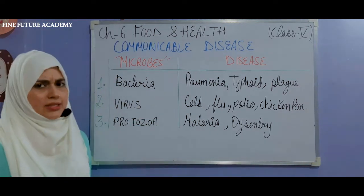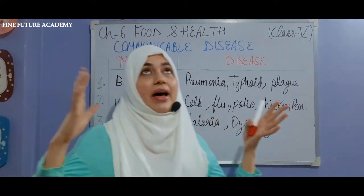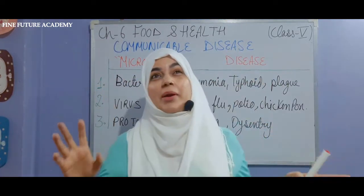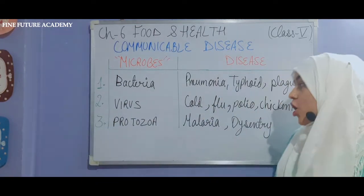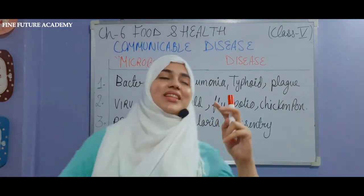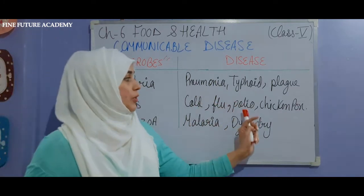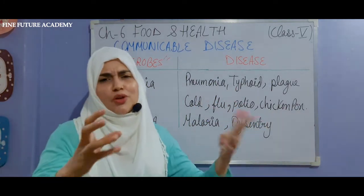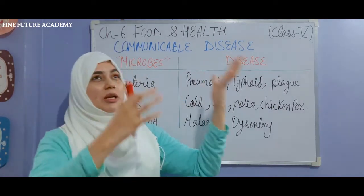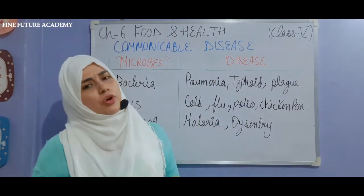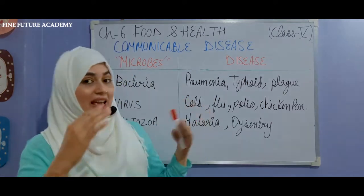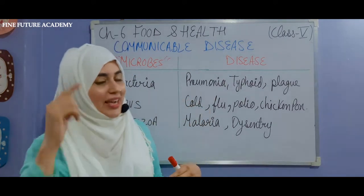Next is the virus. The virus is the most common and is still present in the environment. Viruses cause cold, flu, polio, and chicken pox. Cold and flu are still very common in children because there are so many viruses in the environment and children are not doing enough protection. I will explain how to protect yourself in the next video.